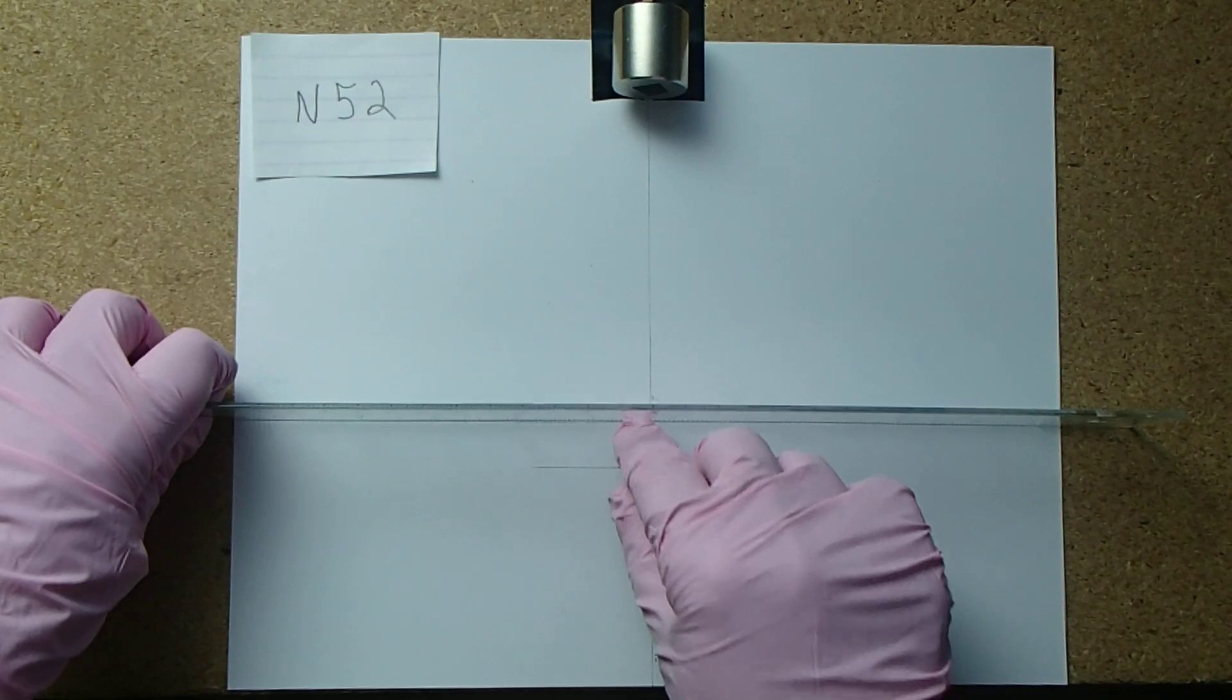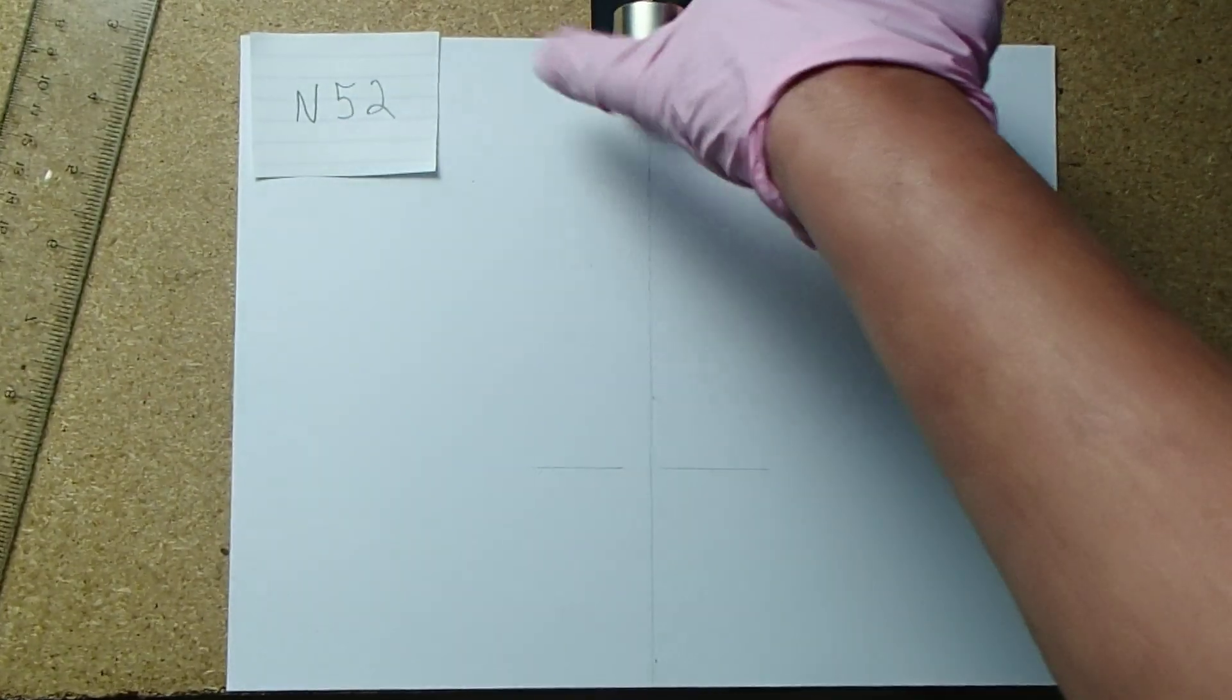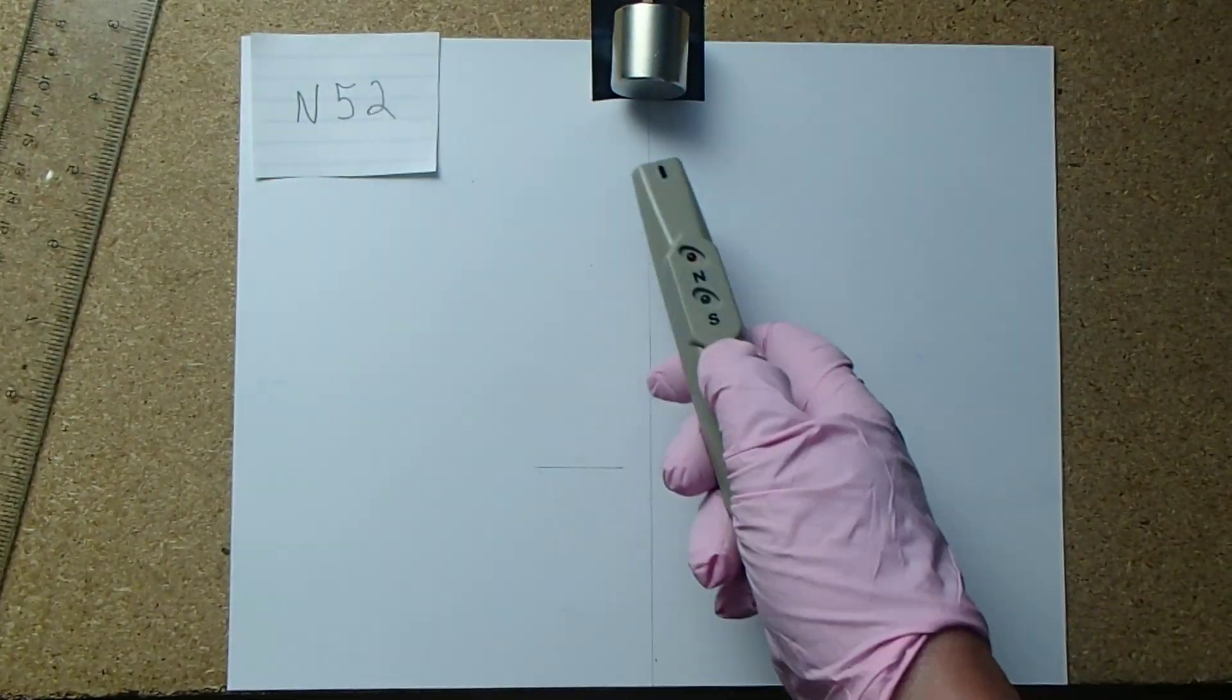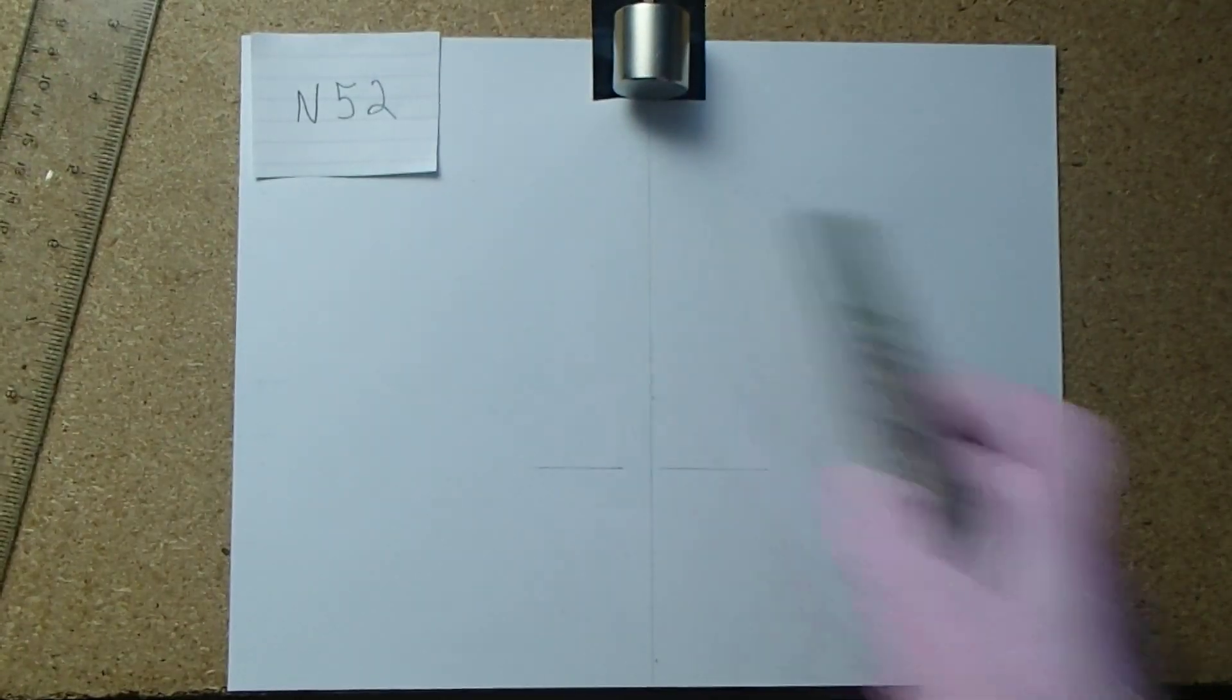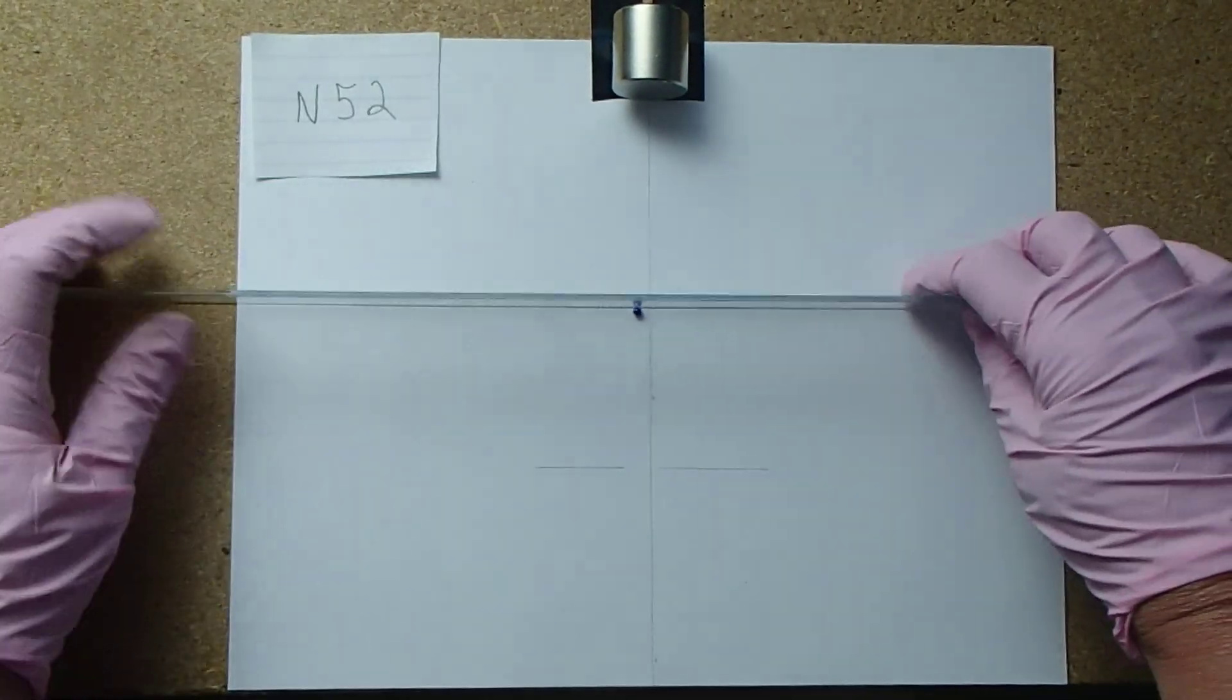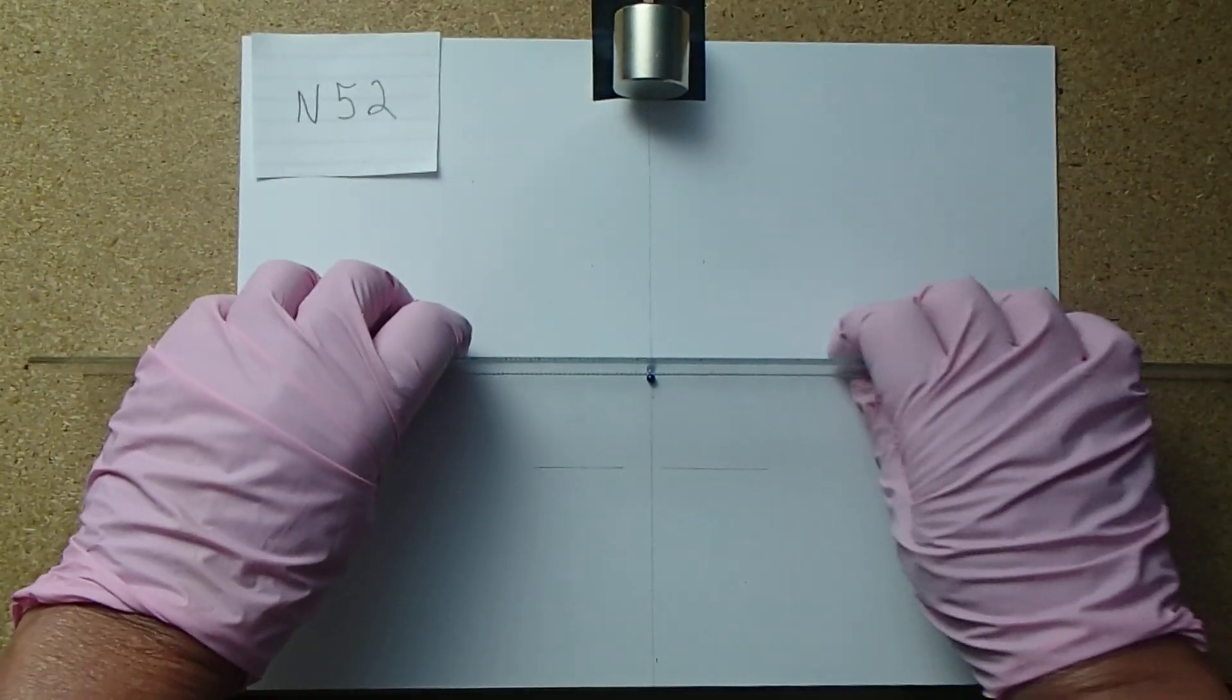Now I'm going to turn the magnet around. Now we have the South Pole. I'm putting it in exactly the same location that I had it for the North Pole. And I'm going to do the same thing.